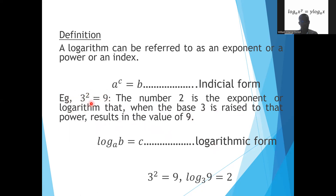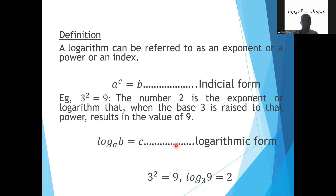So that is an example. Now we can convert this indicial form into a logarithmic form. Log b to base a will give us c, and that is the logarithmic form. You can convert this to that and vice versa. So 3 squared being equal to 9 can be written as log 9 to base 3 being equal to 2.